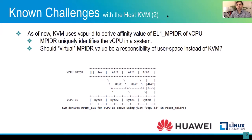Right now, the MPIDR value is being derived using the VCPU ID sent by QEMU to KVM. KVM does some sort of mapping, as you can see in the diagram, and derives the MPIDR value, which gets programmed into the VMPIDR register for that particular CPU.